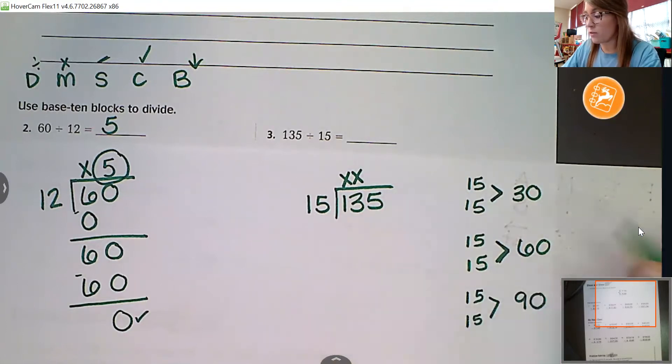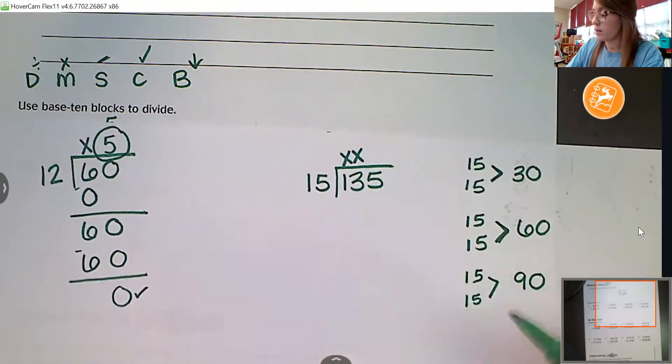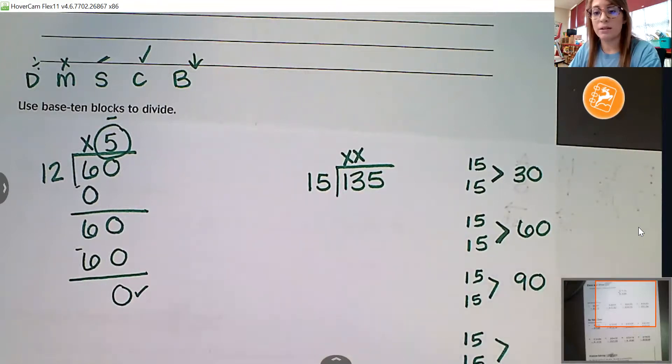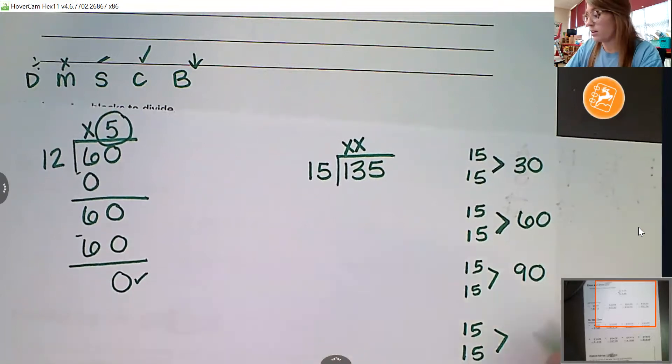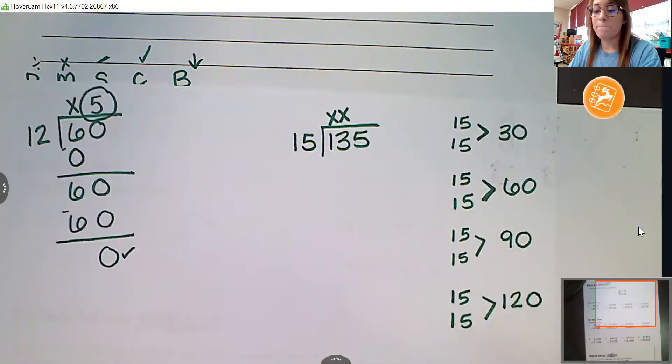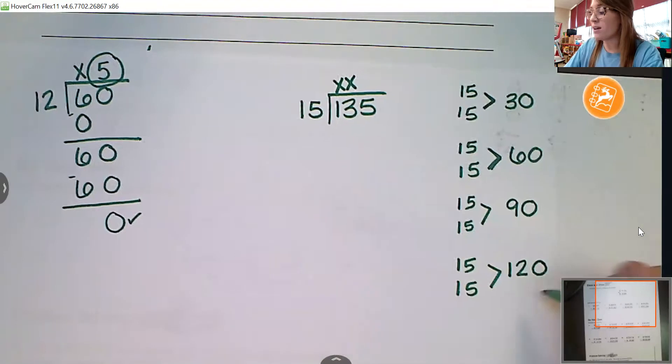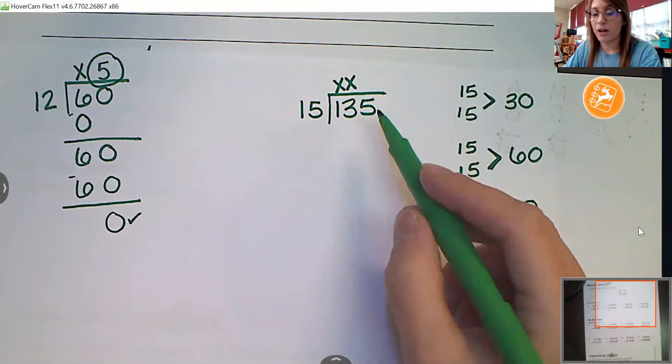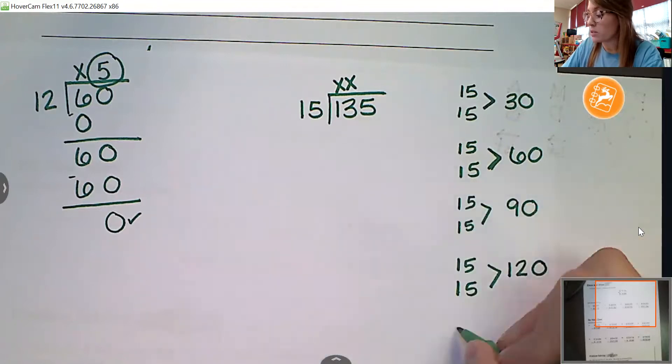Very good. So far we've got two, four, six, and we're not quite there yet. If we had another 30, that would be very good, 120. Still not quite there. But if we have another 30, are we going to go over this 135? Yes, we are. So, I'm just going to do one more 15 to get me to 135.